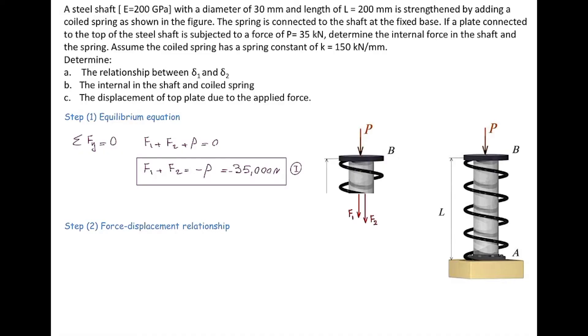In the second step, we try to find a relationship between force and displacement. For the shaft, the displacement is determined by using the axial deformation equation. Delta 1 is F1 L1 divided by E1 and A1.